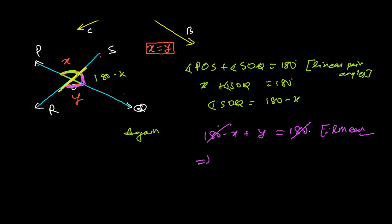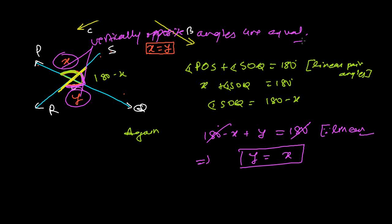And from here, this minus X will go to the other side, so it will be X here and Y will be here. It means Y is equal with X. Means this angle is equal with this angle. It means vertically opposite angles are equal. Vertically opposite angles are equal.